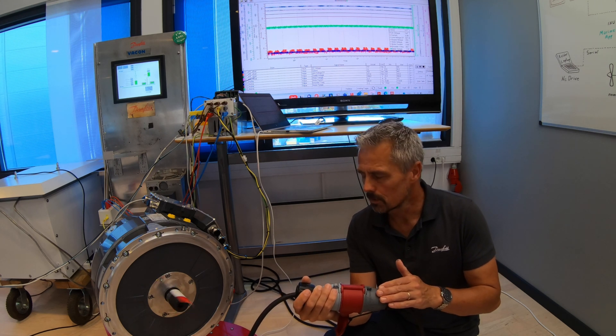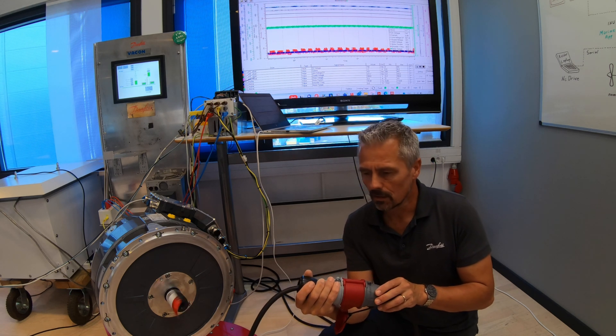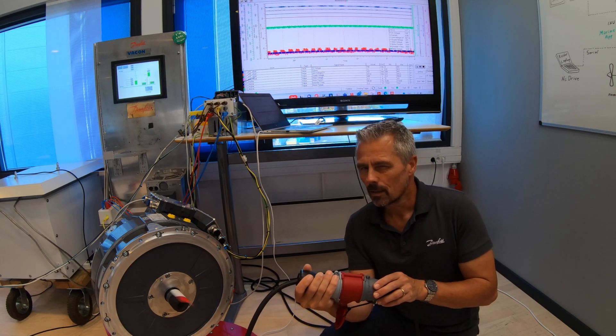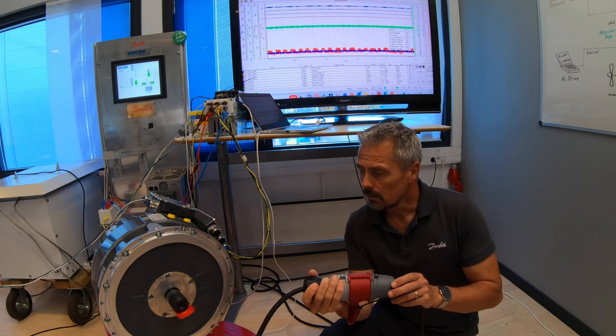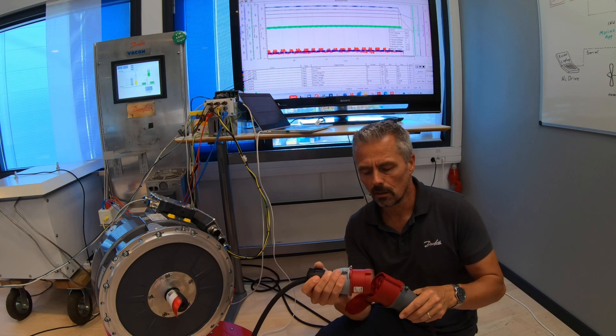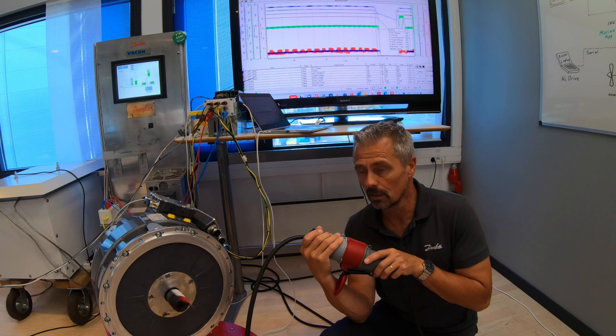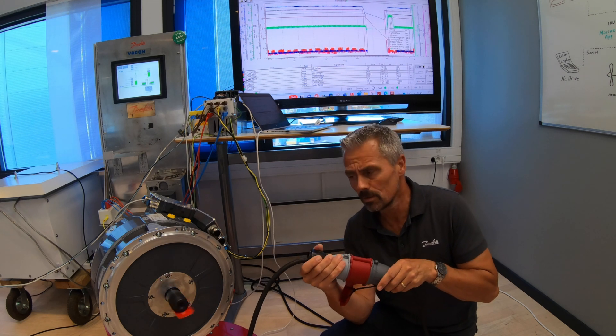On DP class 2 ships there is a requirement that critical functionalities like thrusters, maneuvering, dynamic gangways and stuff, they should continue running even though there is up to a 2 second power blackout. And there should be no need for reset from PLC or humans or anything.